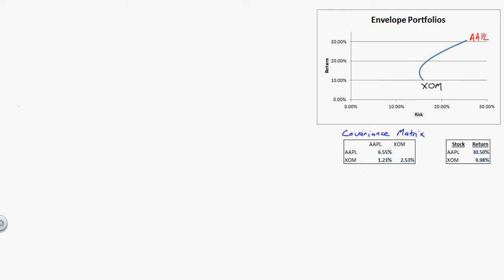In this video, we're going to assume there are only two stocks in the world: ExxonMobil and Apple. We found the expected return for Apple to be 30.5%, and the variance of Apple to be 6.55. We take the square root of that to get the standard deviation.